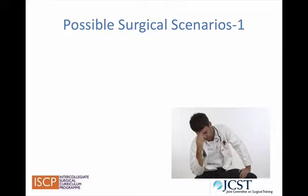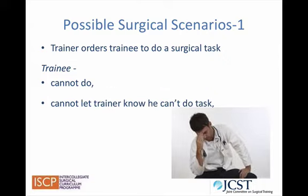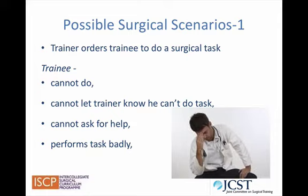Here are some possible surgical scenarios where power and status differences, not properly addressed, could cause problems between trainer and trainee. The first scenario occurs when a trainer orders a trainee to do a surgical task which the trainee cannot do. However, the cultural background of this trainee inhibits him from letting the consultant know he cannot do the task, as this would mean a loss of face. It also inhibits the trainee from seeking help. Consequently, the trainee remains silent, does not ask for help, and performs the task badly — patient safety can therefore be compromised.